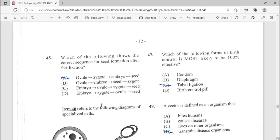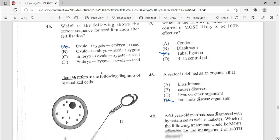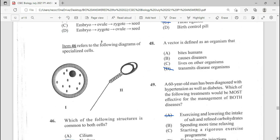45, not so much of a popular question. Which of the following shows the correct sequence in seed formation after fertilization? They did say that this question will be on the paper for May-June biology, 2022. So A is our answer there. Ovule, zygote, embryo, seed.